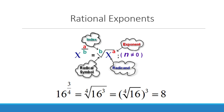For example, 16 to the 3/4 power means you're taking the fourth root — your denominator becomes your index. This is the fourth root of 16 to the third power. This can also be written as just the fourth root of 16, and then take that whole answer to the third power. The fourth root of 16 is 2, because 2 times itself four times gives you 16, and then raising that to the third power gives you a final answer of 8.